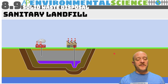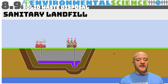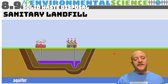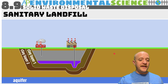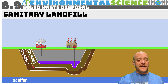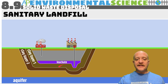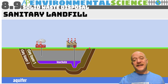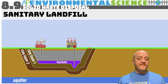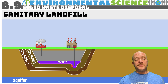When we dispose of items we send them to a sanitary landfill. It is called 'sanitary' because steps are taken to prevent leaking into aquifers. There are two layers of clay — clay layer one and clay layer two — and a lining in the middle, whether plastic or clay, to prevent leachate from escaping. Leachate is the toxic liquid that accumulates in a landfill.